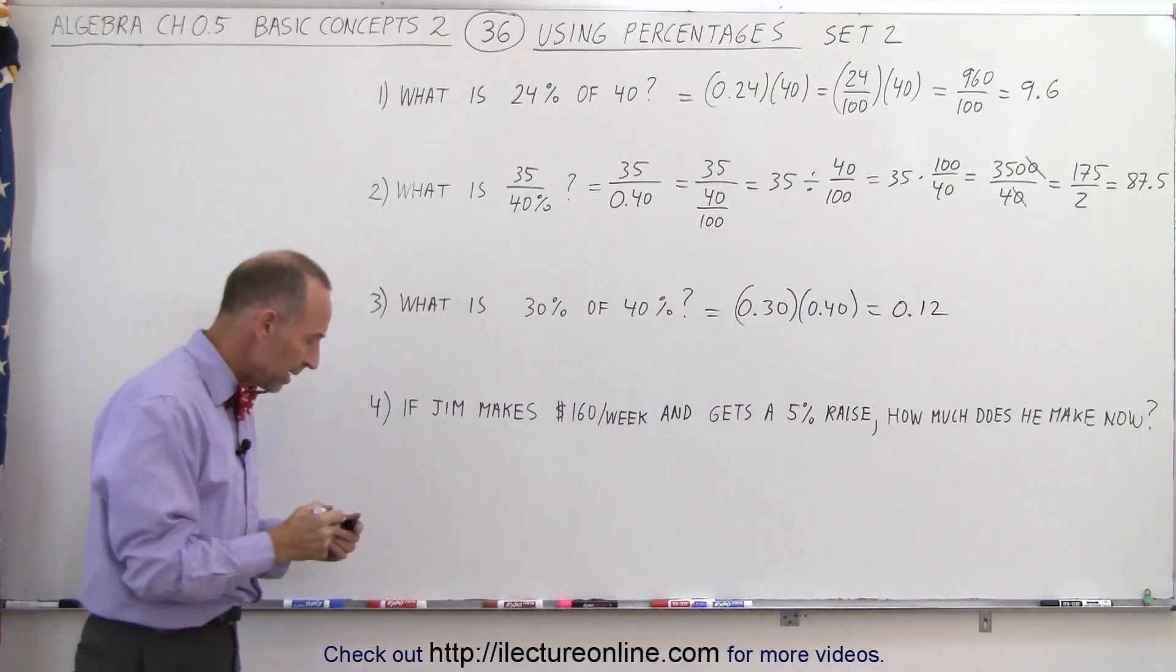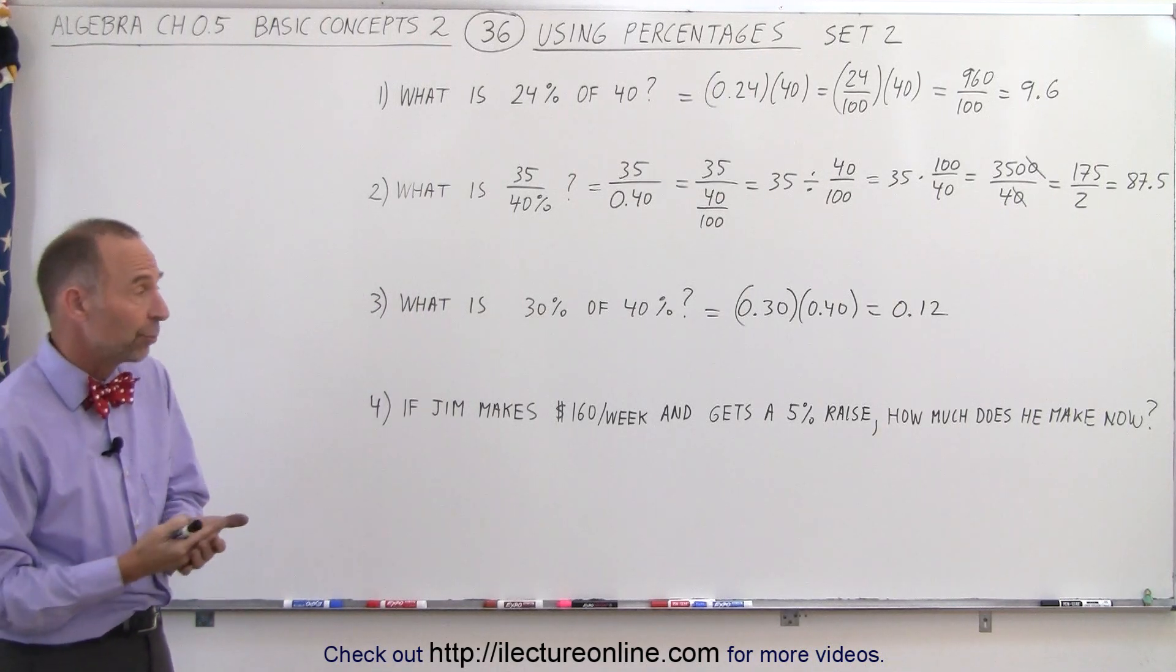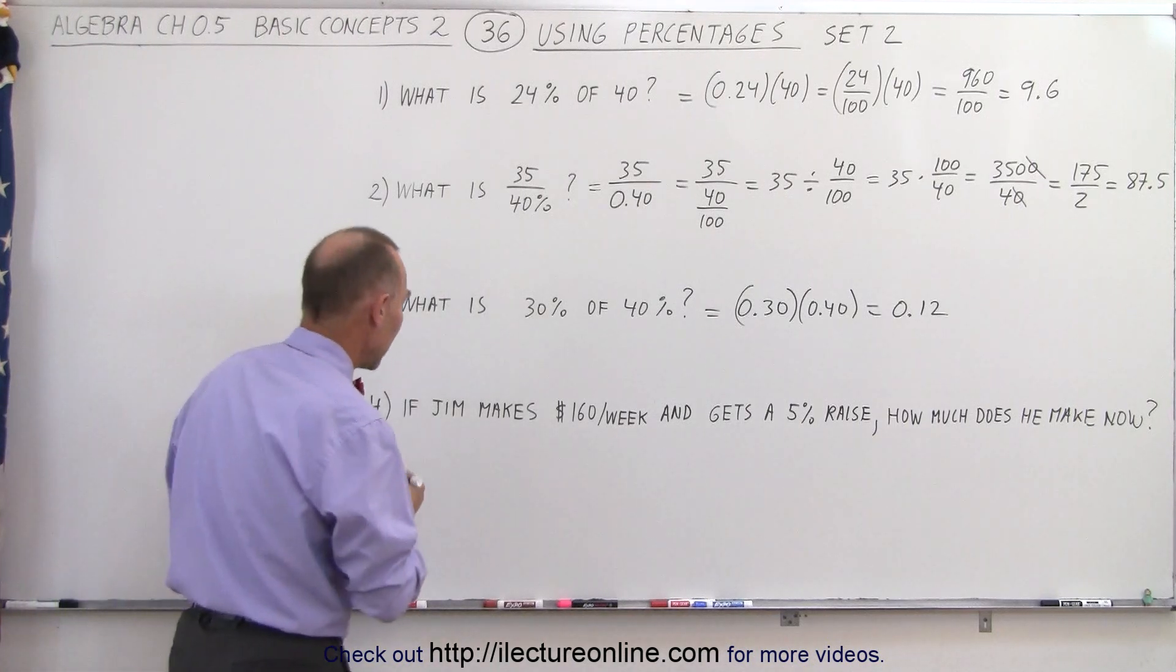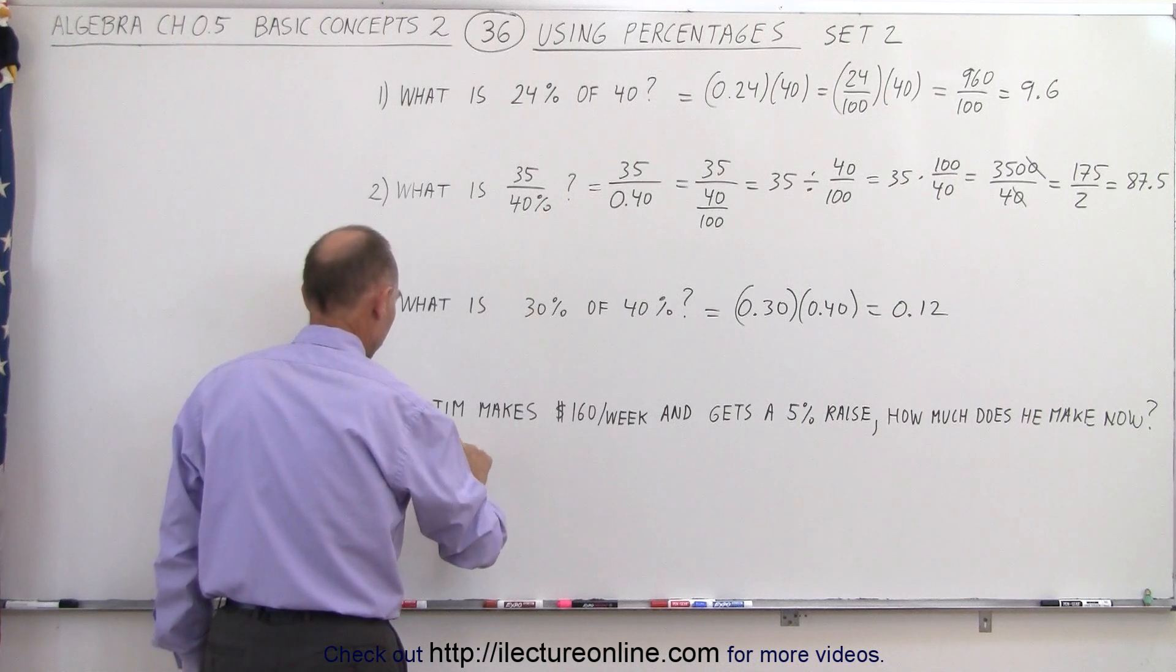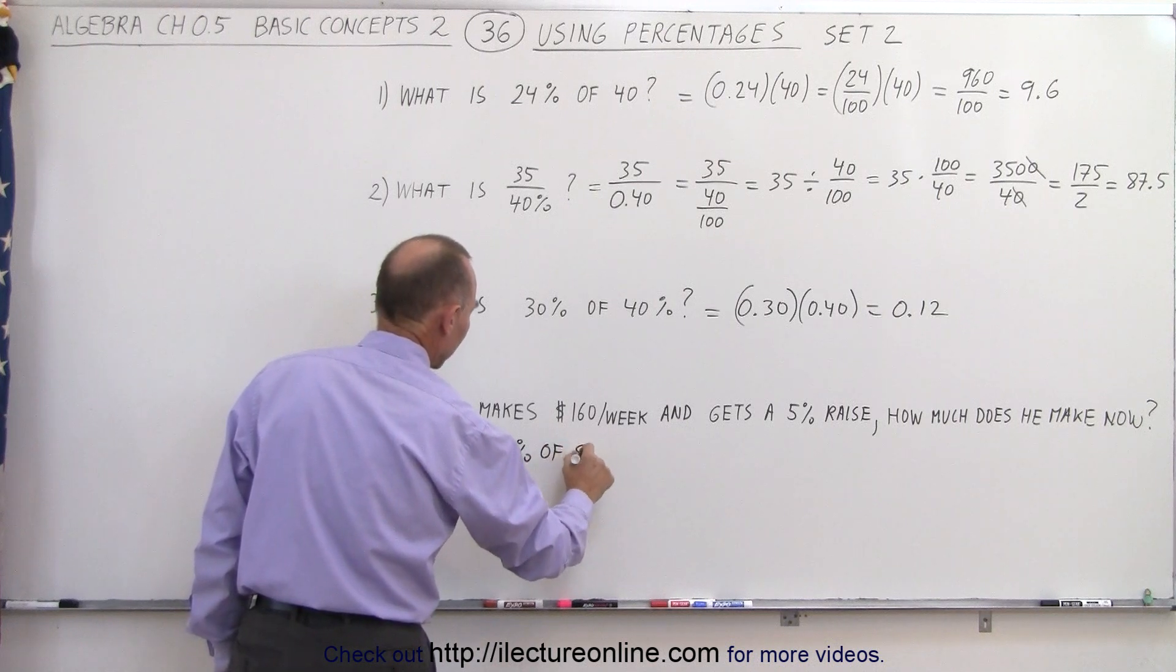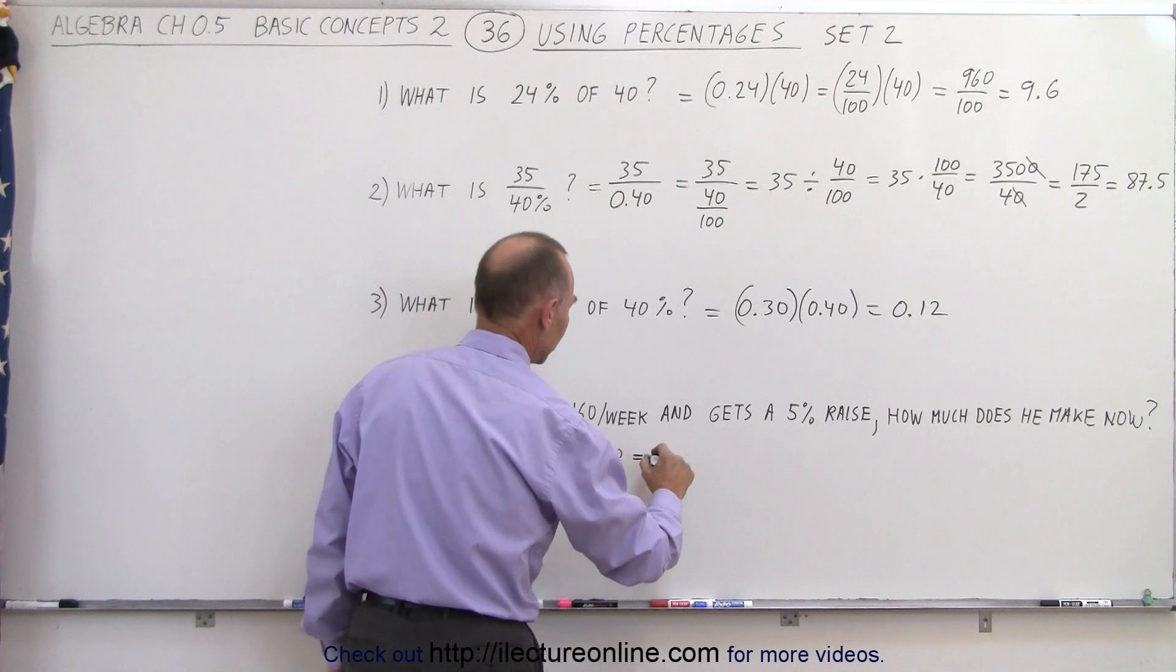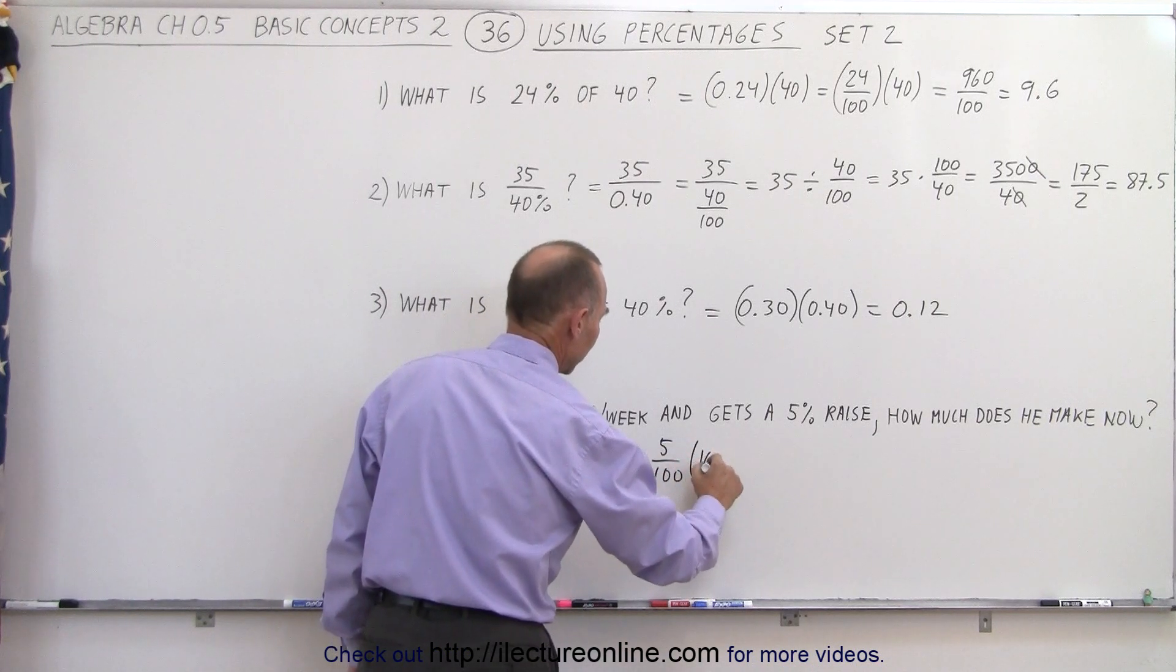And finally, it says, if Jim makes $160 per week and gets a 5% raise, how much does he make now? So there's two ways to do that. We can say the raise is equal to 5% of the original amount that he made. That's $160. So 5% of 160 is equal to 5 over 100 times 160.